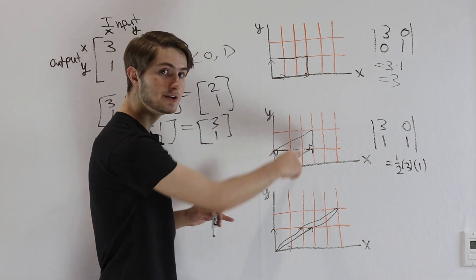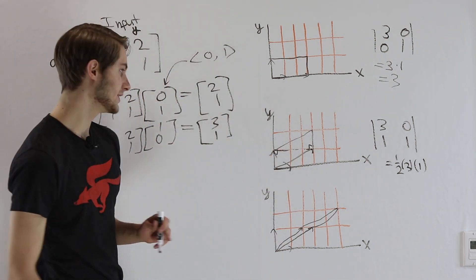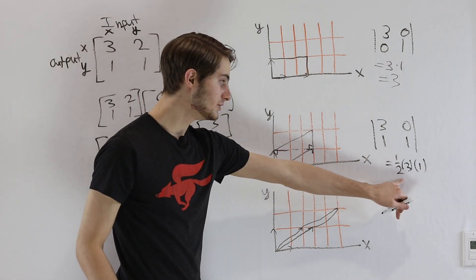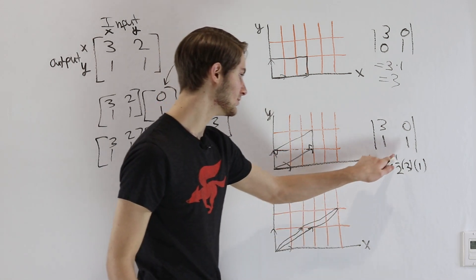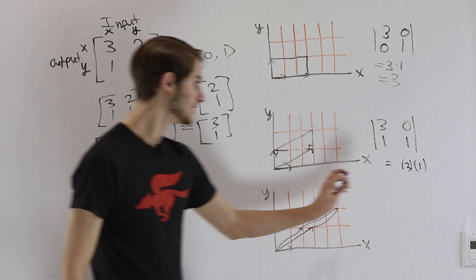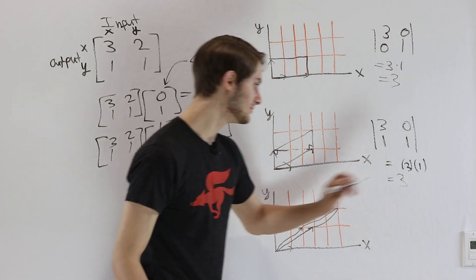Notice this triangle up here is going to be the exact same calculation, a base of 3 and a height of 1. So we're actually going to have two of these 1 half times 3 times 1, which means we can just ignore that 1 half. And our final result is again going to be 3.